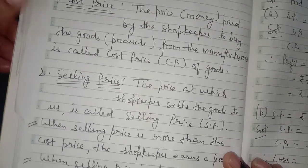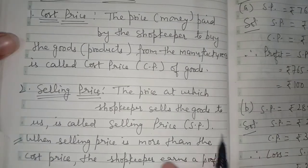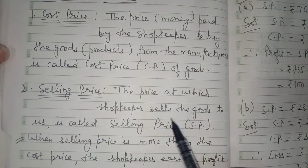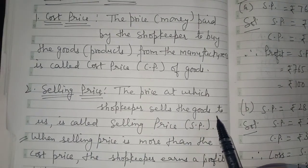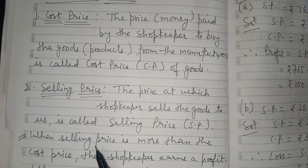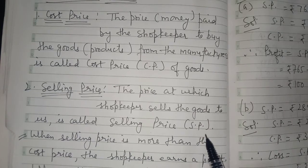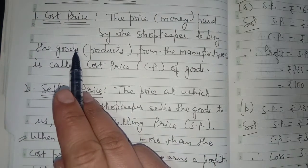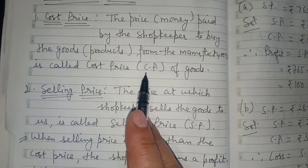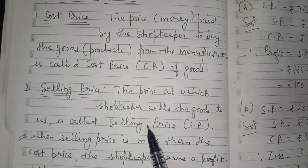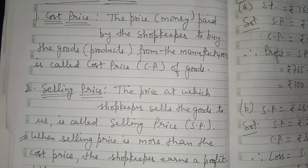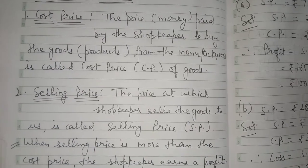What is selling price? The price at which the shopkeeper sells the goods to us is called selling price, or SP. The short form of cost price is CP and the short form of selling price is SP.